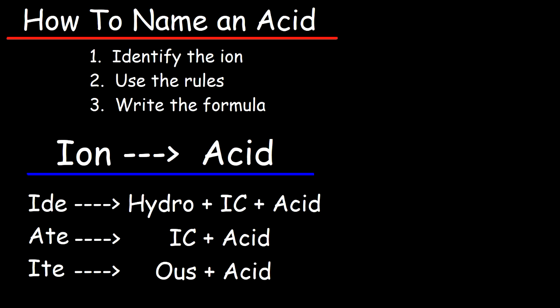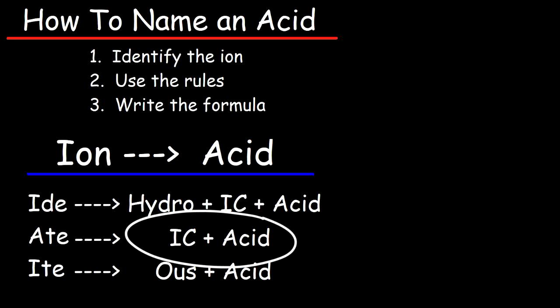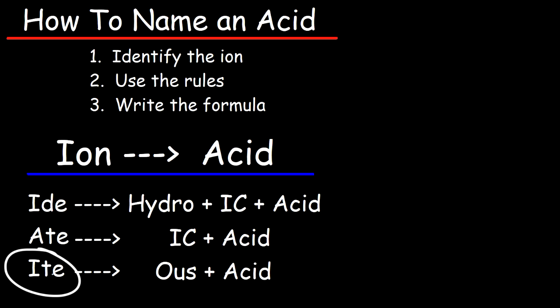Now if the polyatomic ion ends in the suffix '-ate', you're not going to use the prefix 'hydro' — all you're going to write is '-ic' plus 'acid'. If the polyatomic ion ends with '-ite', then you're going to replace that with '-ous', and then add the word 'acid'.